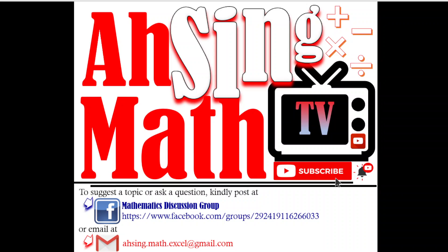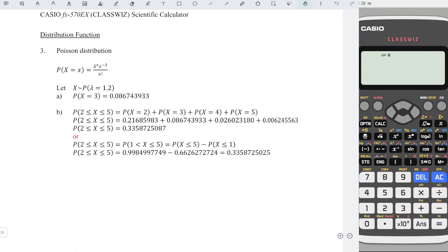Hi, this is Async. You are now watching Async Mad TV. In this video, we will learn how to obtain the probability for a Poisson distribution by using Casio calculator. Consider the random variable X follows a Poisson distribution with lambda equal to 1.2.